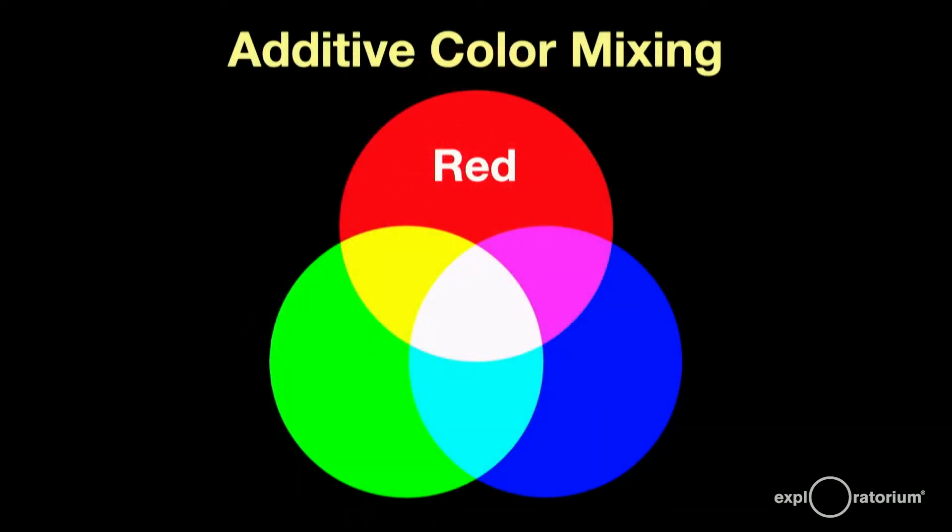Let's review our additive color mixing. Our primary colors are red, green, and blue. Blue and green make cyan. Red and blue make magenta. Red and green make yellow. And finally, all three primaries, when mixed together, make white.